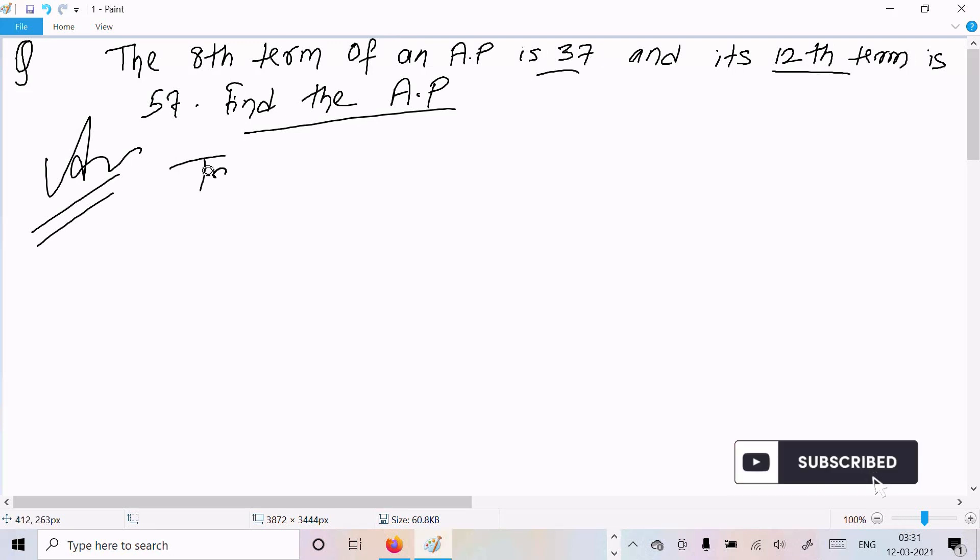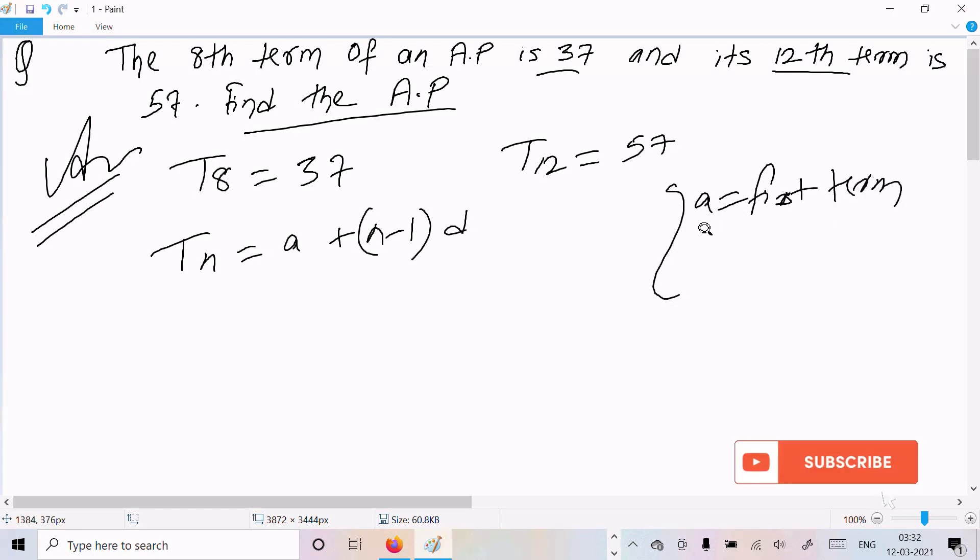So here t8 is given 37 and t12 is given 57. Now we know the formula tn equal to a plus n minus 1 into d. So here a equals first term and here d equals difference between two consecutive numbers.